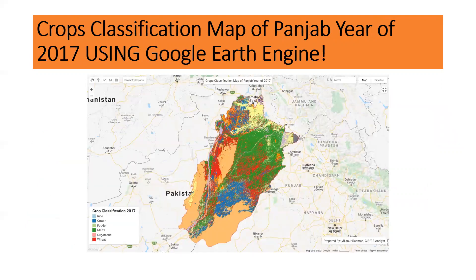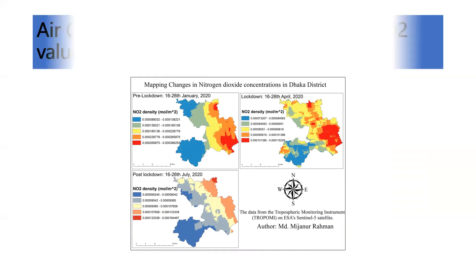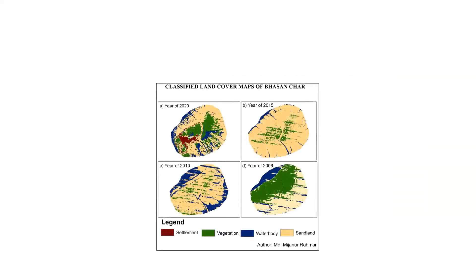This is another task for Punjab — classifying different crop types such as rice, cotton, fodder, sugarcane, and wheat. For crop classification, you must have ground truth data; otherwise it is not possible. This is another task for air quality monitoring — specifically, the concentration of nitrogen dioxide in Dhaka during pre-lockdown, lockdown, and post-lockdown COVID periods. This is the Dhaka city mapping.